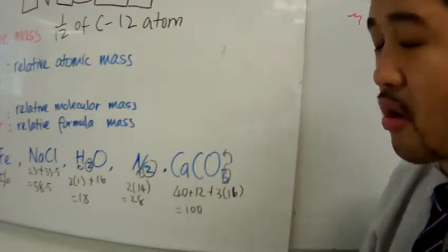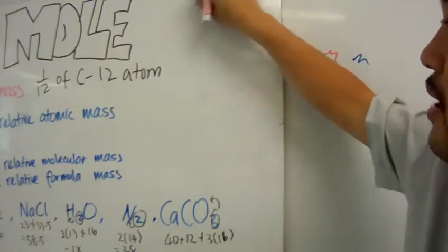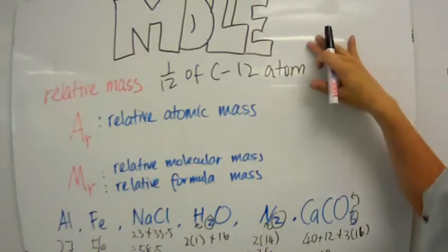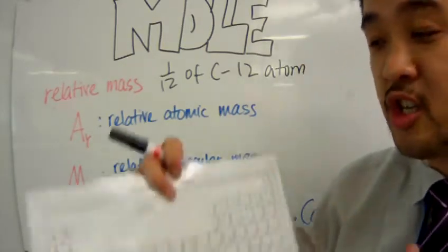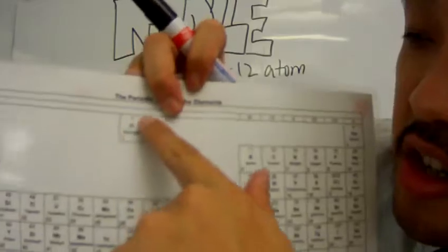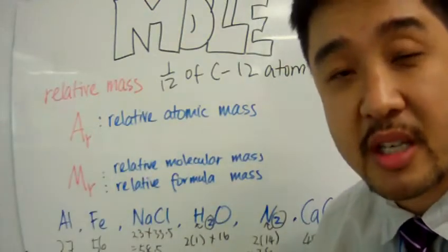And now, to make sense of relative mass to the concept of mole, relative mass are actually unitless. That's why you don't see grams over here. You don't see grams on the periodic table and stuff like that. That's because relative mass are unitless.